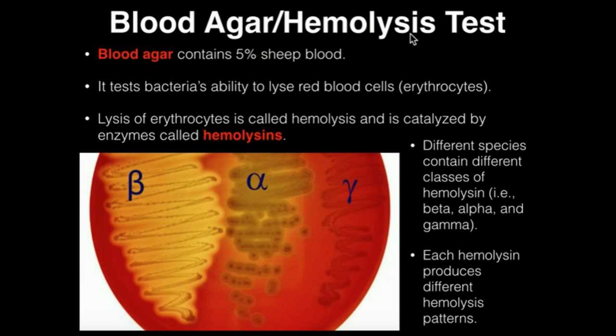Hemolysis is the process of destroying red blood cells by some mechanism. If you ever see the term erythrocyte, that also means red blood cell. The hemolysis test tests a bacteria's ability to destroy red blood cells. Some bacteria, which would be positive for hemolysis, are going to make enzymes called hemolysins, and these are enzymes that destroy red blood cells.